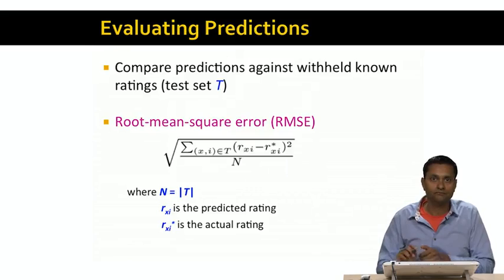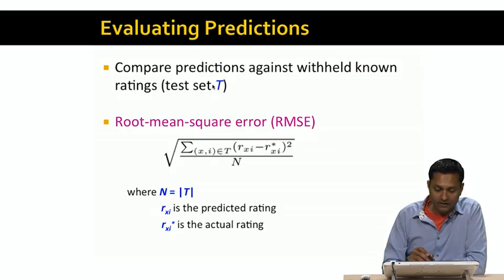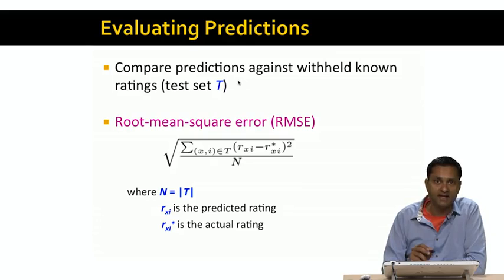The trick is to compare the predictions against the withheld known ratings, or the test set T. And the most common measure is a measure called the root mean square error, or RMSE for short.